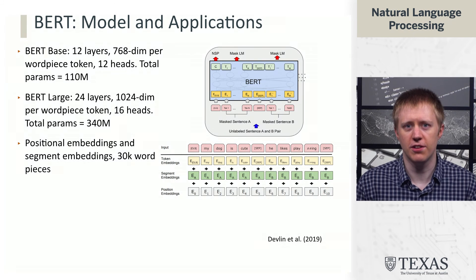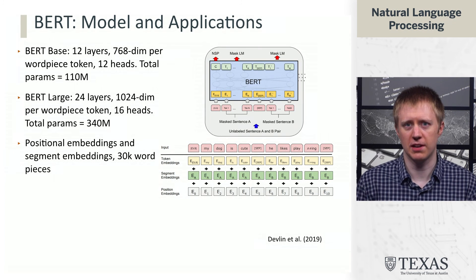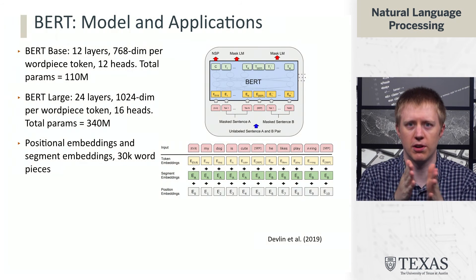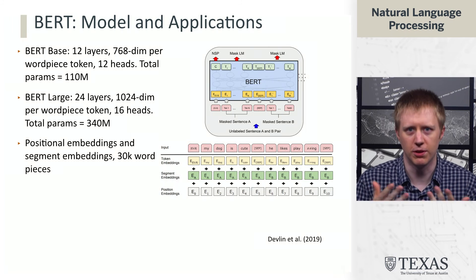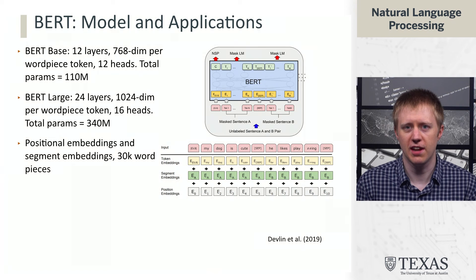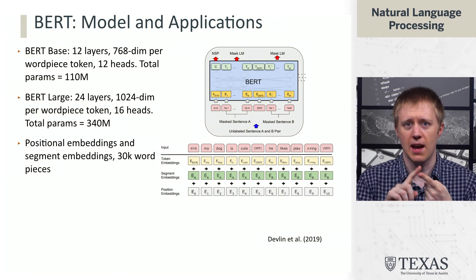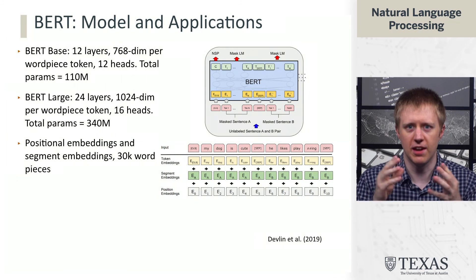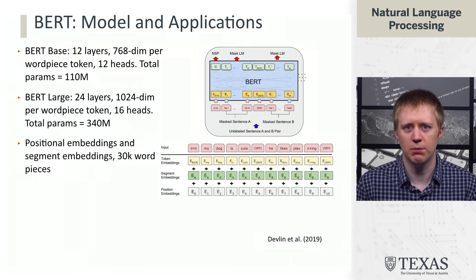One aspect of transformers we discussed was the need to represent position in them somehow, because by default the self-attention mechanism treats the input as a bag of words — you don't have any notion that two words occur next to each other, which is important for dealing with sentences. They had an additional set of encodings: one set that captured position by embedding an integer index representing where the word is in the sequence, and then segment embeddings, which we'll come back to in a minute.